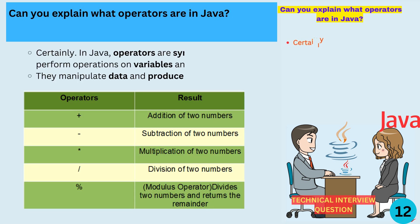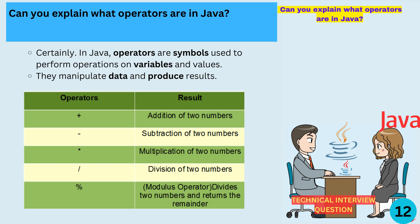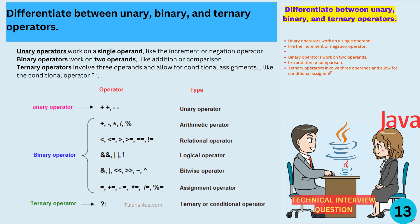Can you explain what operators are in Java? In Java, operators are symbols used to perform operations on variables and values. They manipulate data and produce results. Unary operators work on a single operand, like the increment or negation operator. Binary operators work on two operands, like addition or comparison. Ternary operators, like the conditional operator, involve three operands and allow for conditional assignments.